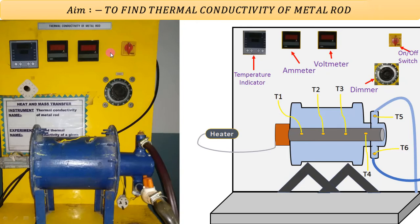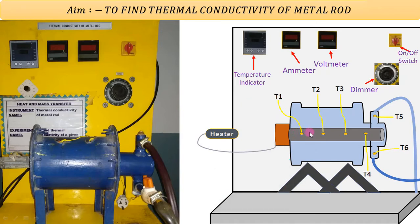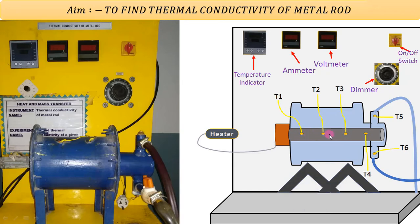Here you can see the blue color cylinder. Inside the blue color cylinder, we have the metallic rod. Observe the schematic: the metallic rod is surrounded by a cylinder. The main function of the surrounding cylinder is to avoid unwanted heat transfer — that is, heat transfer from the metallic rod to the outside air — so that we can neglect different heat losses for experimental purposes.